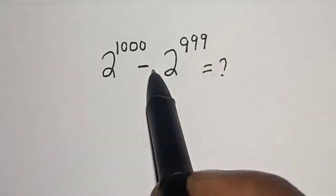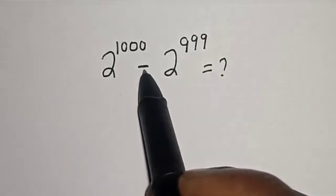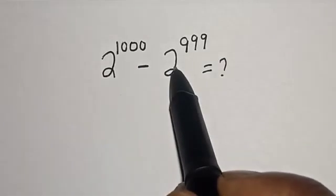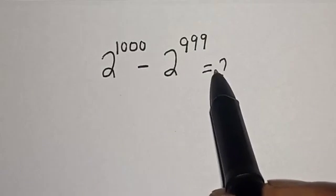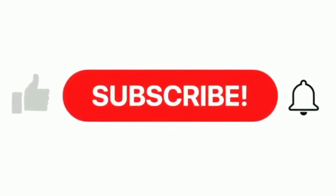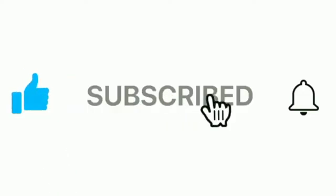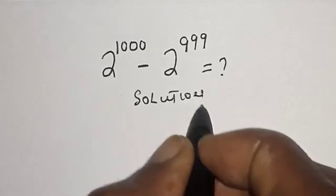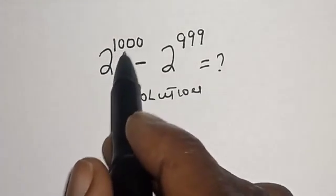Hello, welcome to Magist. In this class we want to evaluate this math problem: 2 raised to power 1000 minus 2 raised to power 999 is equal to what? Like, share, comment and subscribe.